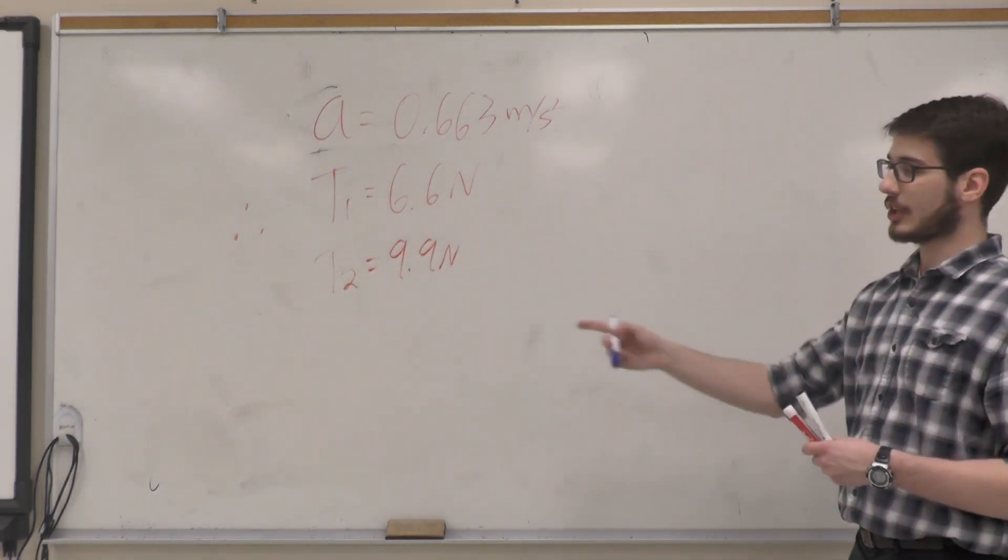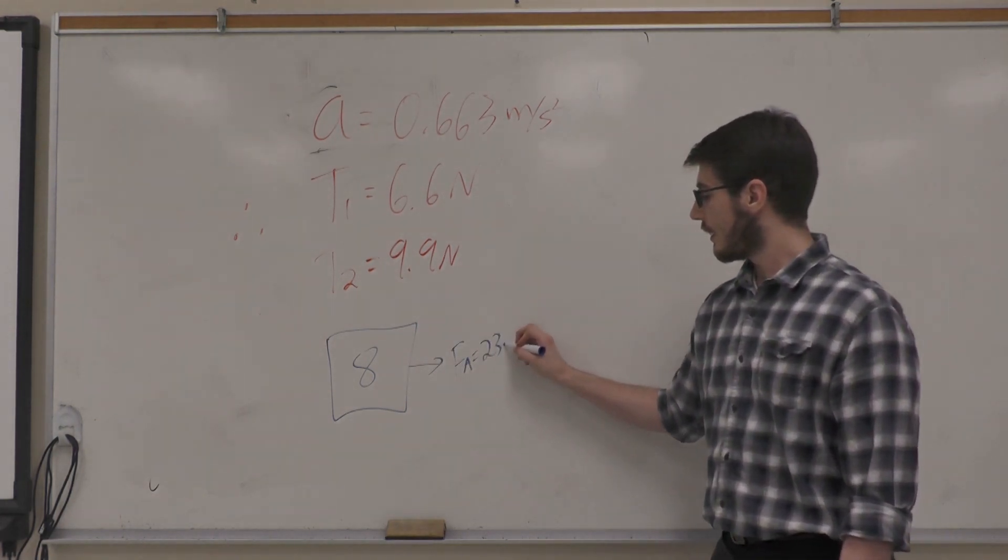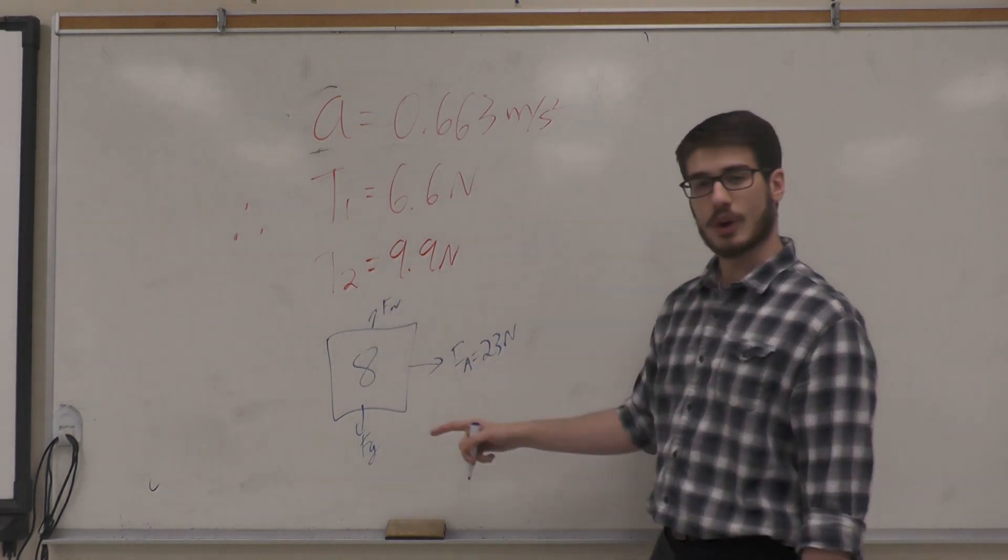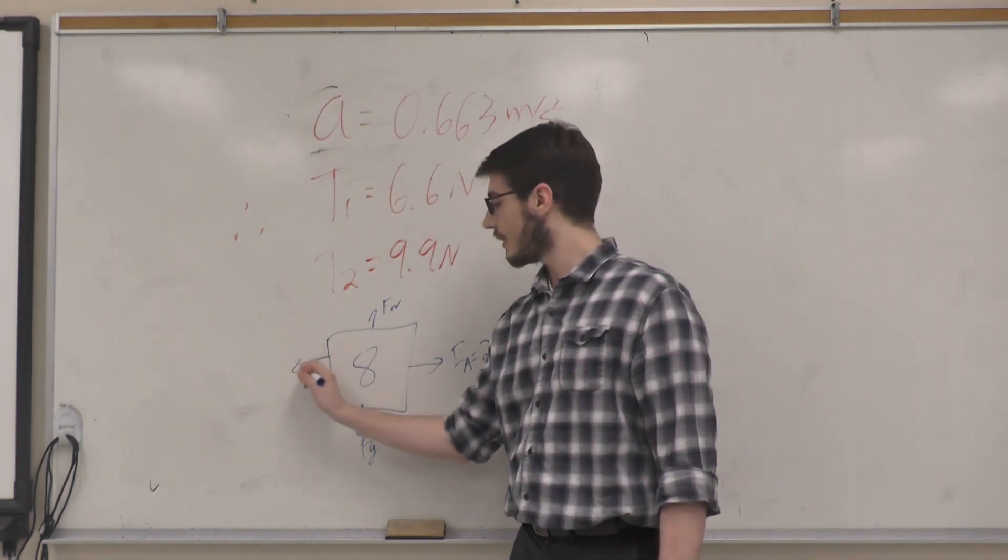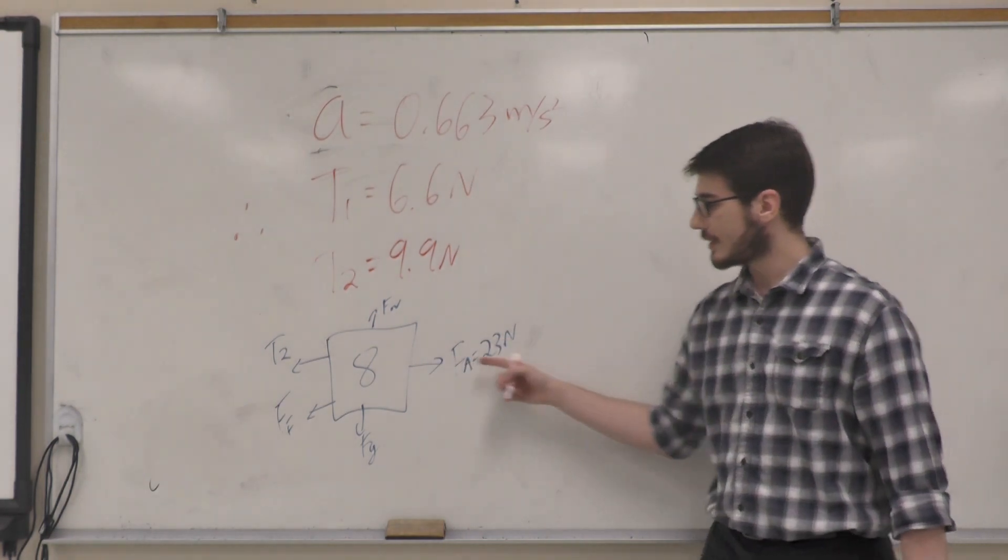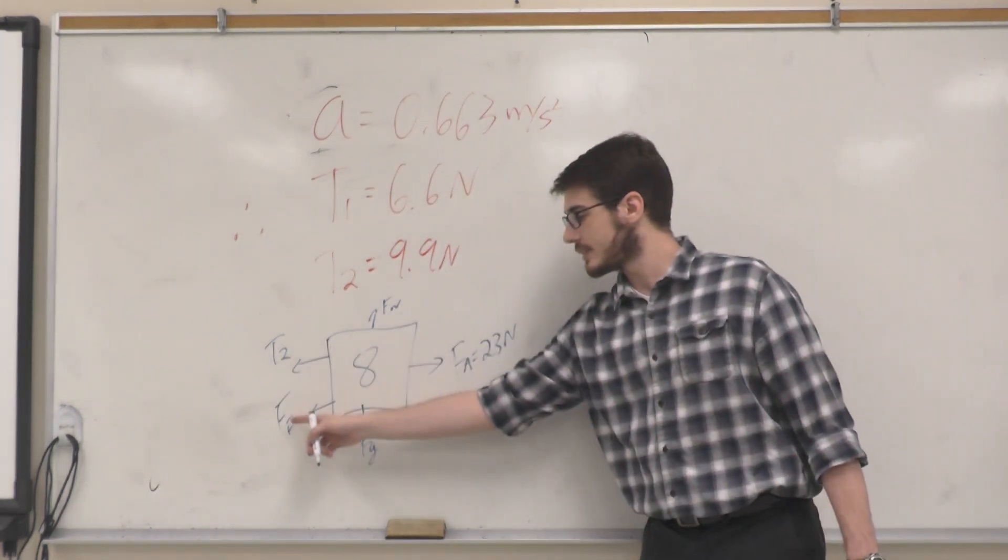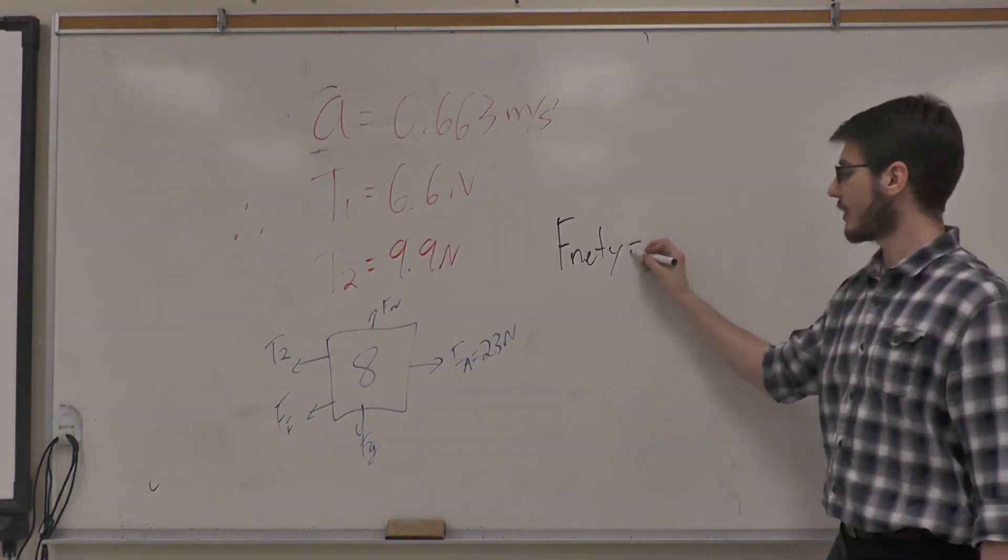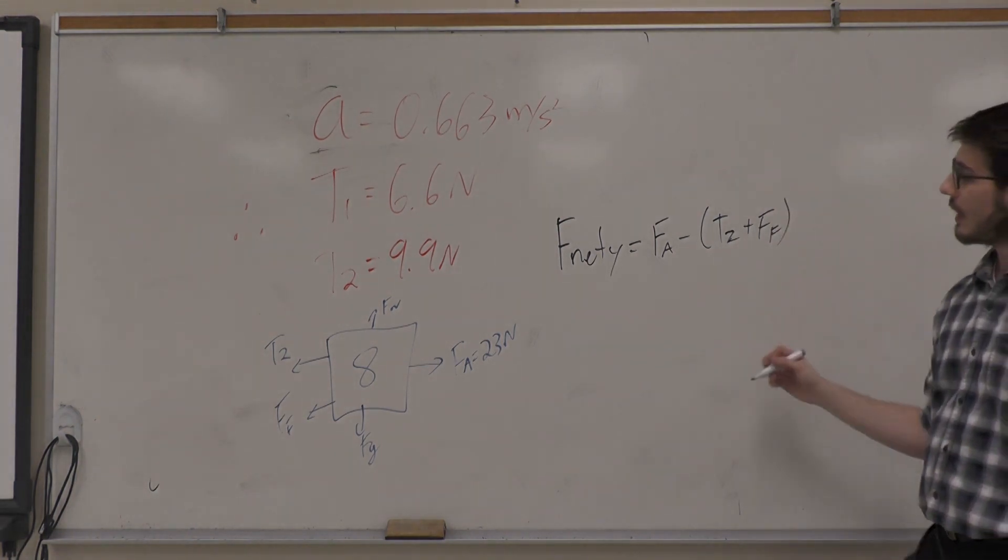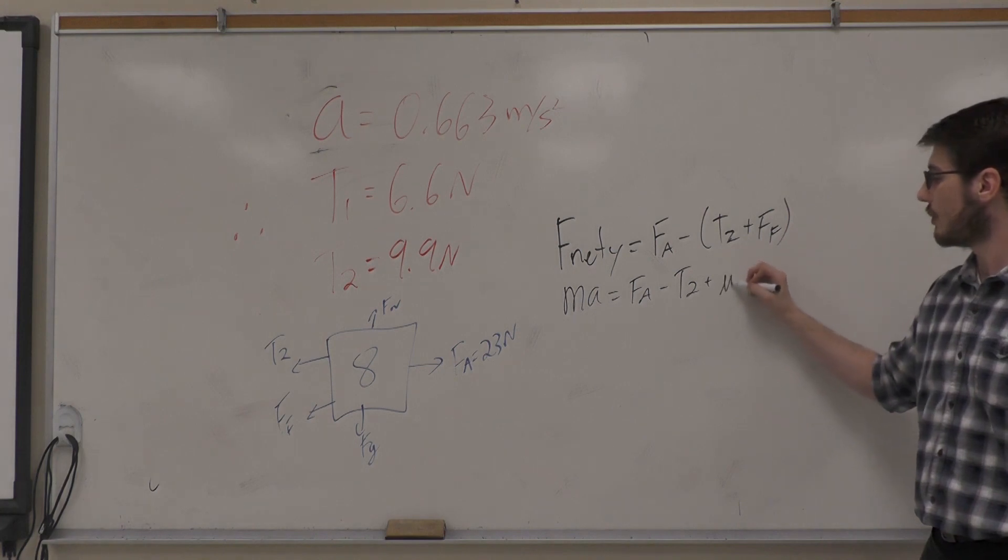We are able to check our work by looking at the very first cart that we've been ignoring so far. We know the first cart has a mass of 8 kg. Since the beginning of the question, we know that the applied force is 23 newtons. We know that the gravitation and the normal force are equal and opposite. The second cart is pulling the first cart back, which is working together with friction. If we look in the y direction, all our values should work out. F net in the y direction has the force applied beating both tension and the force of friction.